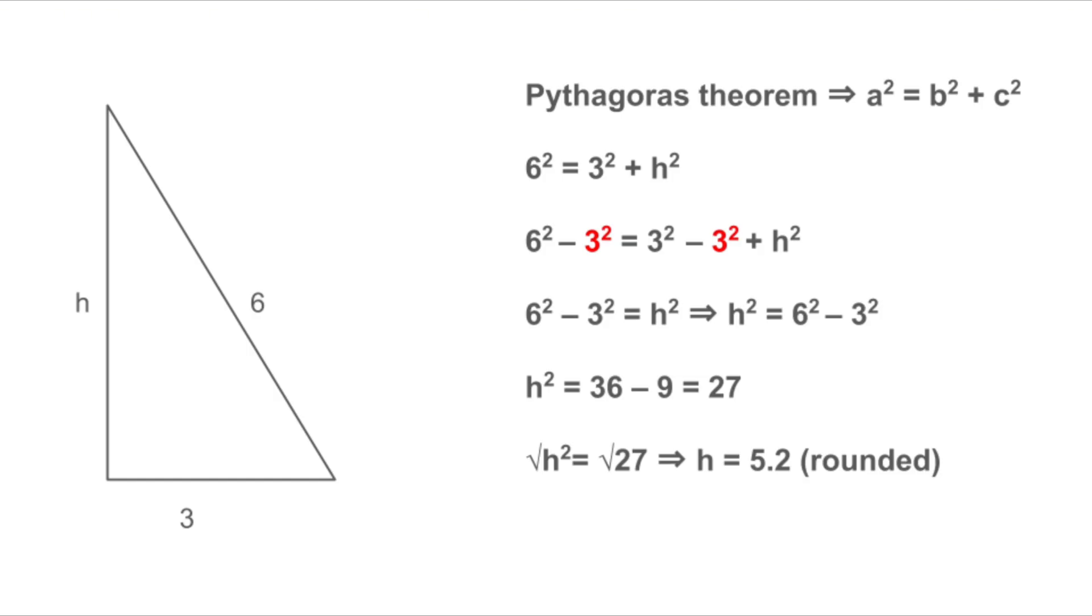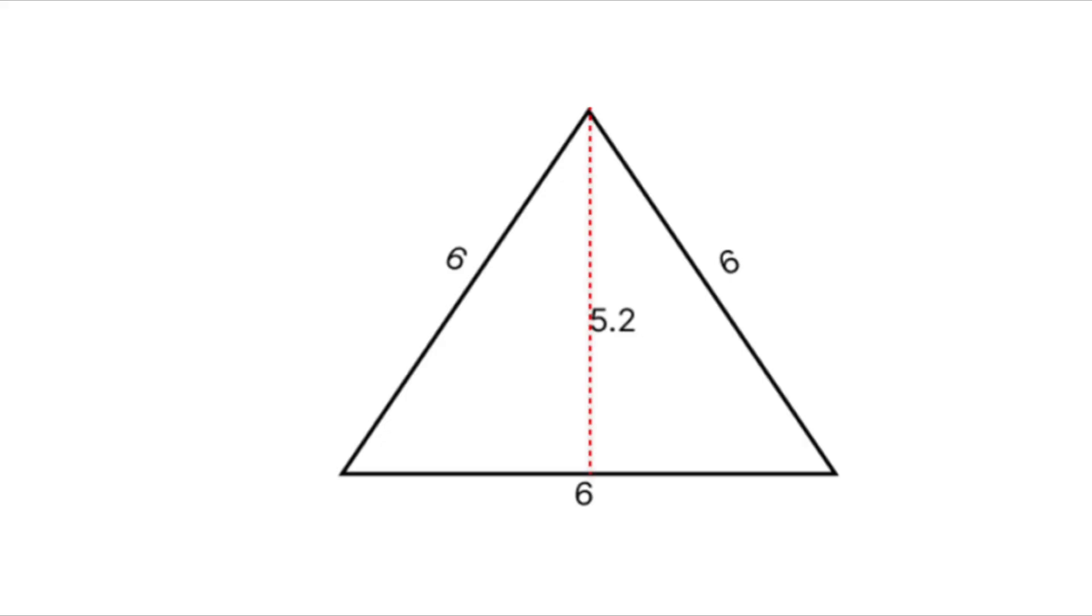To find H, we take the square root of 27, which is approximately 5.2. So there we have it. The height of our equilateral triangle is about 5.2 units.